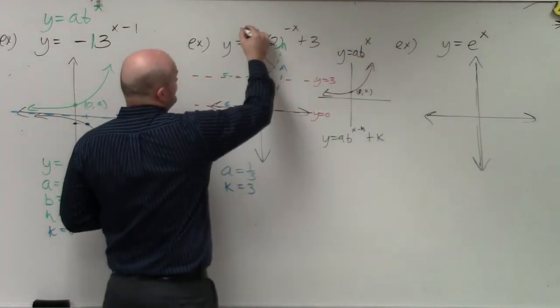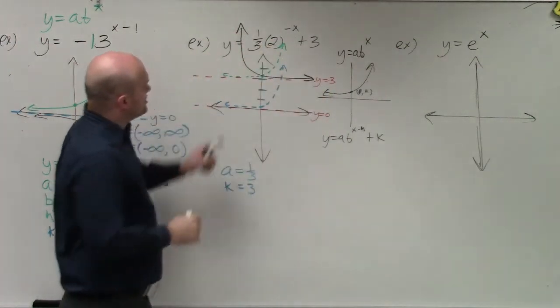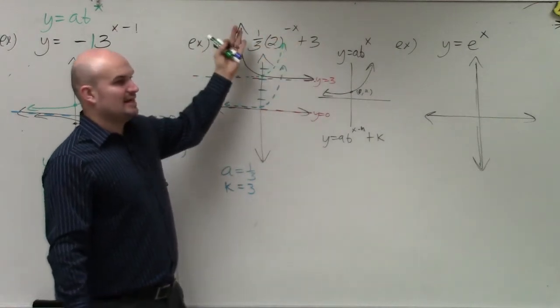So therefore, my graph is going to look something like this. So it's going to be a reflection. You're basically just taking this green graph and reflecting it about the y-axis.